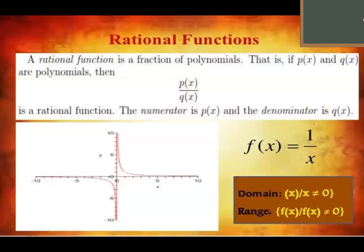Rational function: what makes the denominator zero is excluded. For example, 1 over (x − 5): your x must not be equal to 5, because that makes the denominator 0. Your range here, f(x) must not be equal to 0. What makes the denominator zero is excluded — that is for rational.